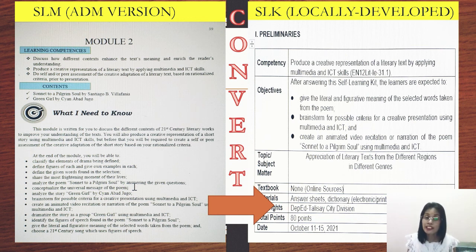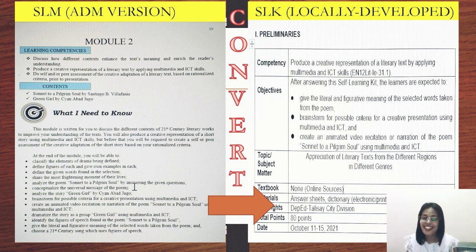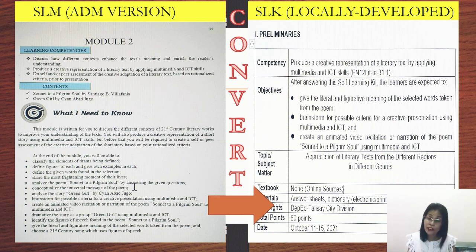After that, you are already ready to create a topic or subject matter that can be found in your content standard. Then supply other details in your SLK — like for example, in this SLK, you can see the textbook and materials that I used, etc. Then after supplying all the necessary details, you're ready for step two.